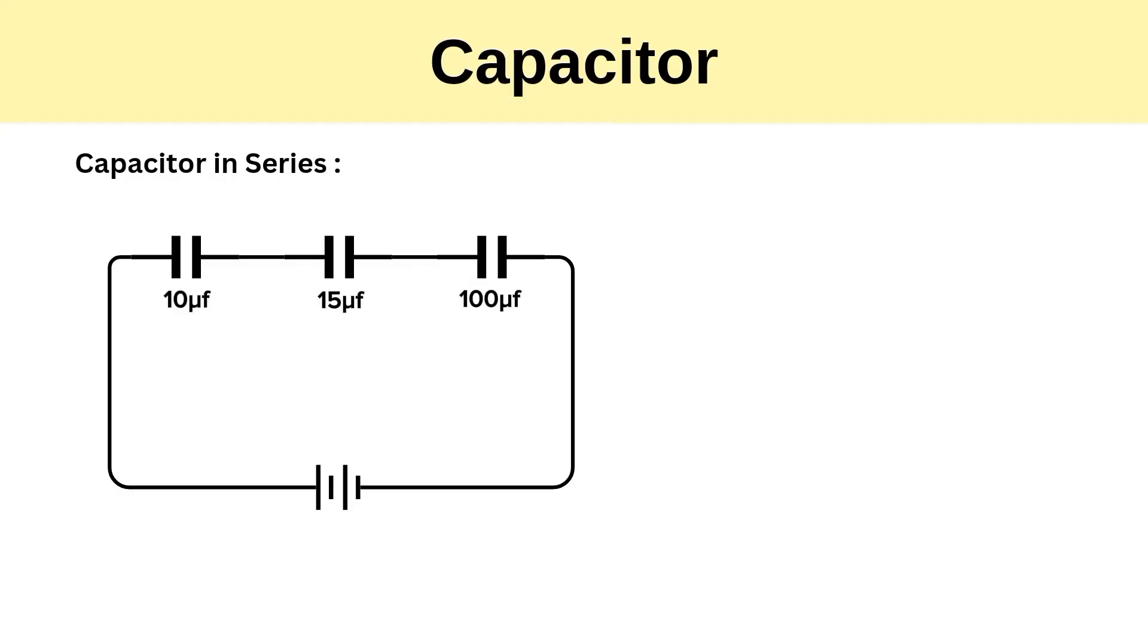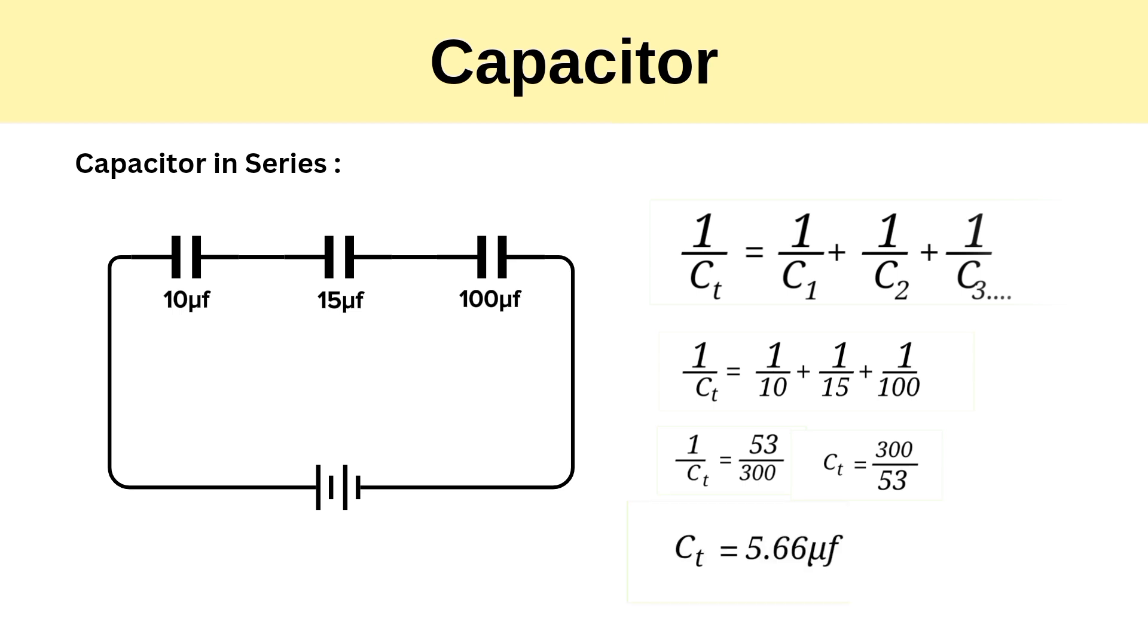For capacitors in series, the total capacitance can be found by adding the reciprocals of the individual capacitances and taking the reciprocal of the sum. So total capacitance 1 by Ct equal to 1 by C1 plus 1 by C2 plus 1 by C3, and so on. Therefore, the total capacitance will be lower than the capacitance of any single capacitor in the circuit.